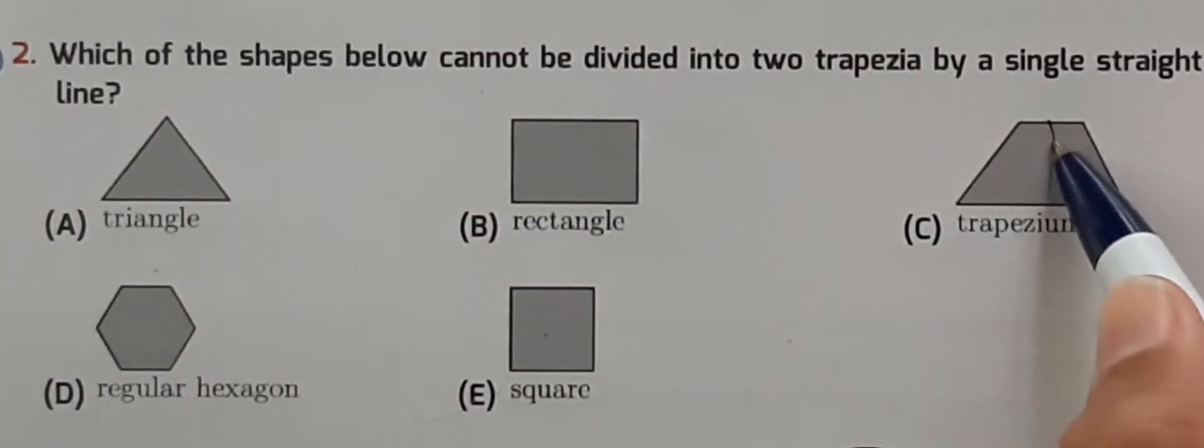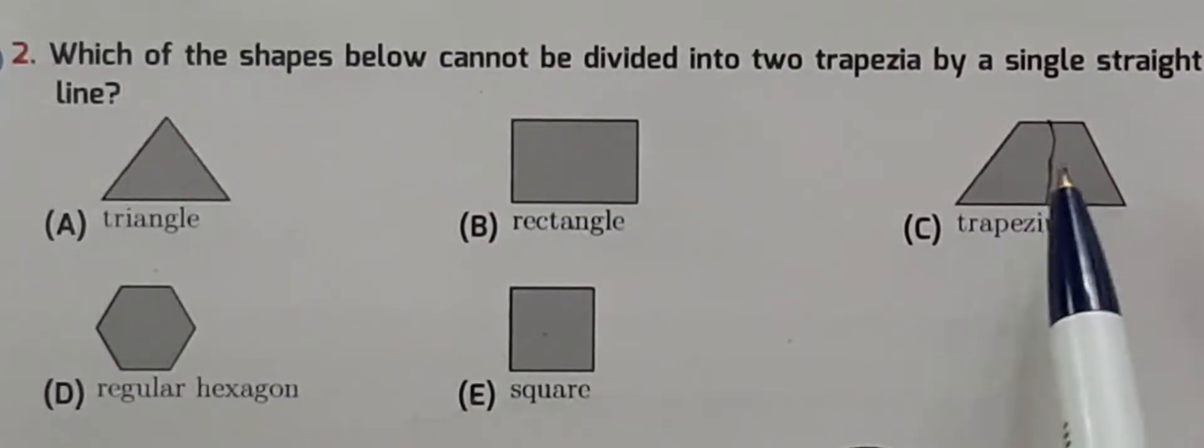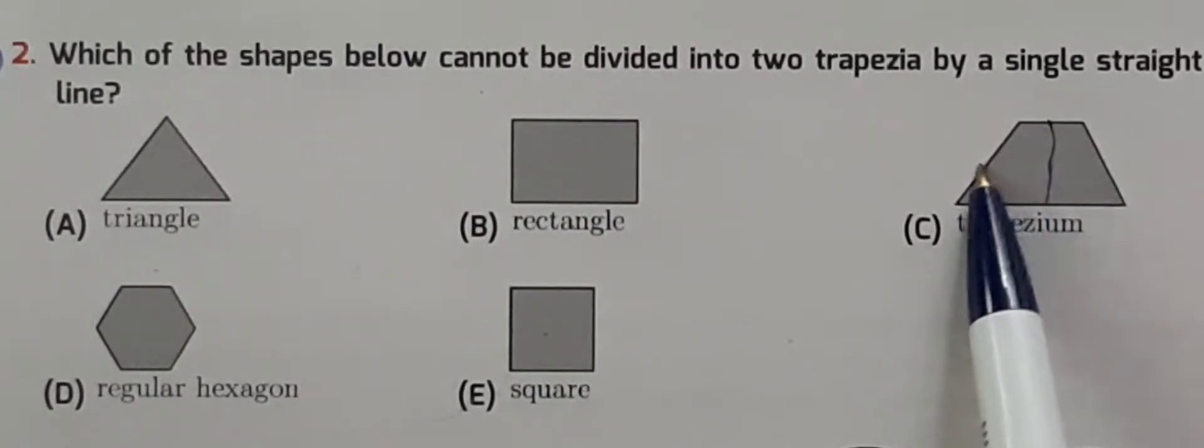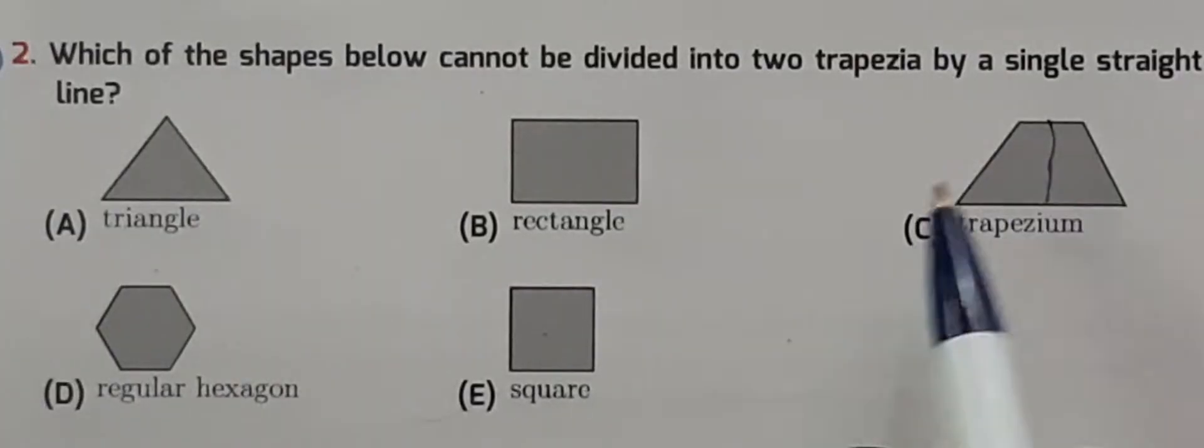If you draw a line through this, it is divided into two parts, and both parts are trapeziums. Each has one, two, three, four sides, and two sides are parallel to each other.